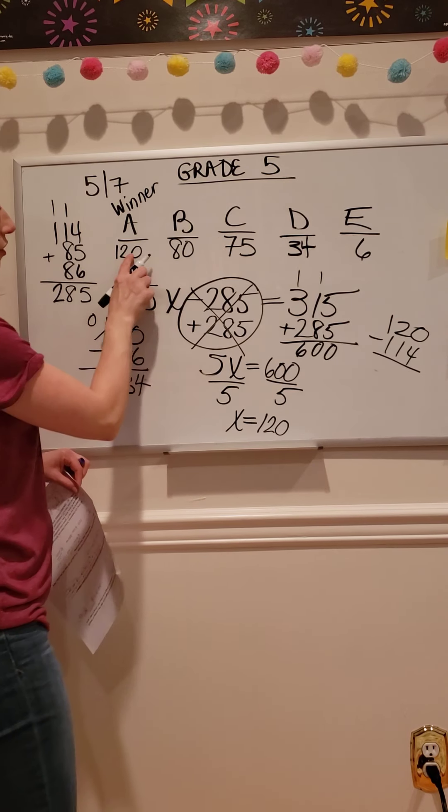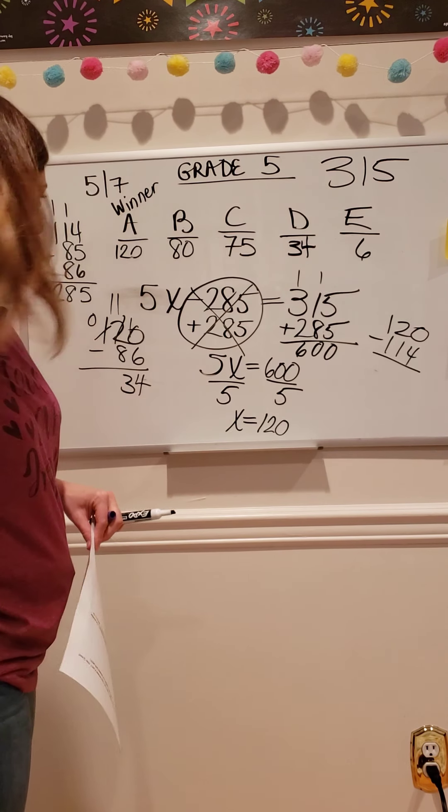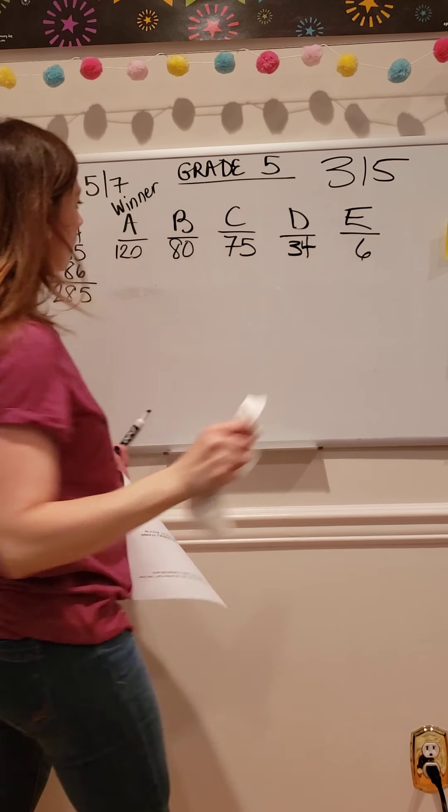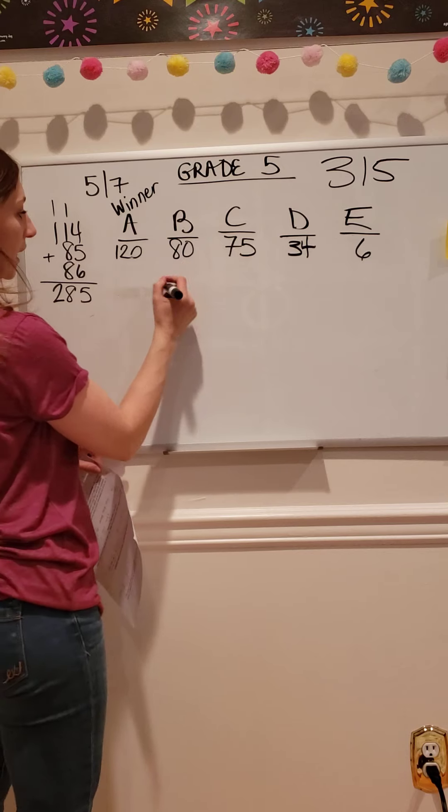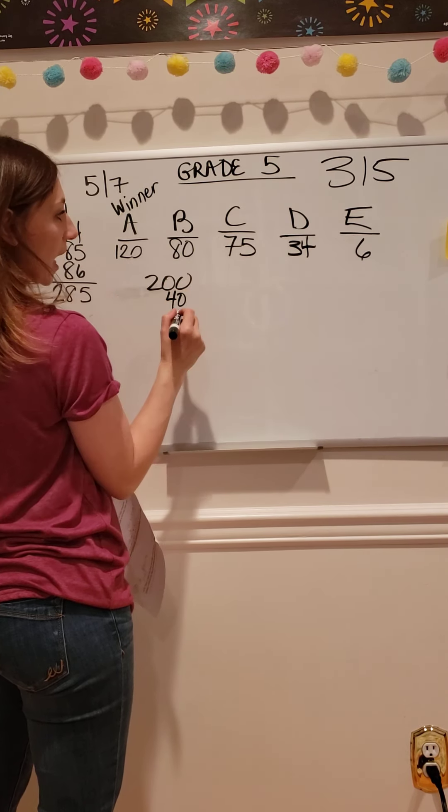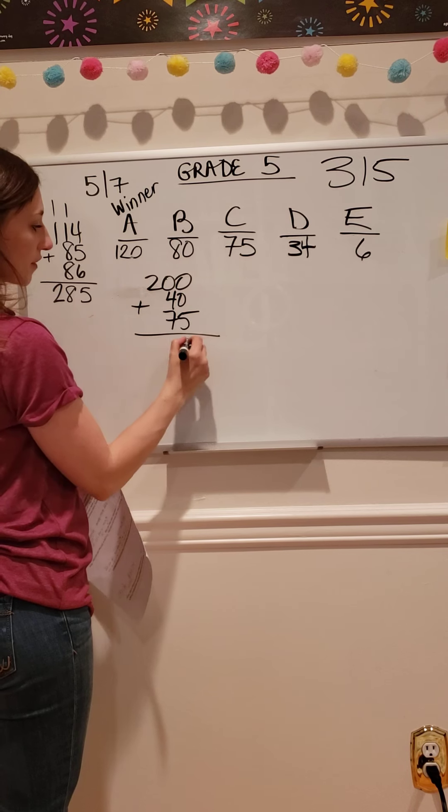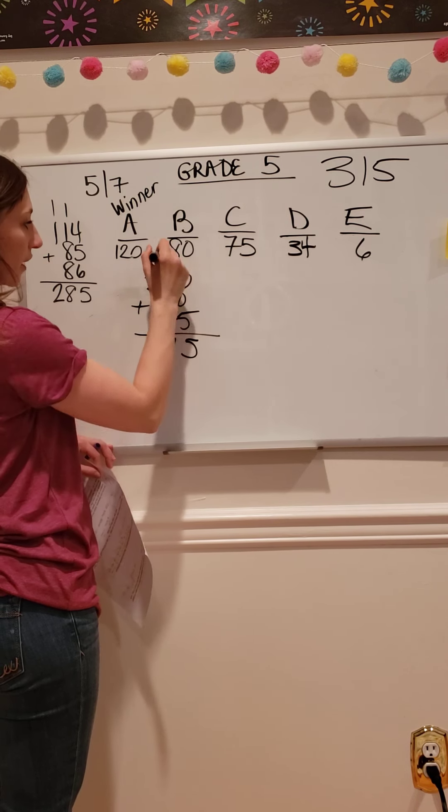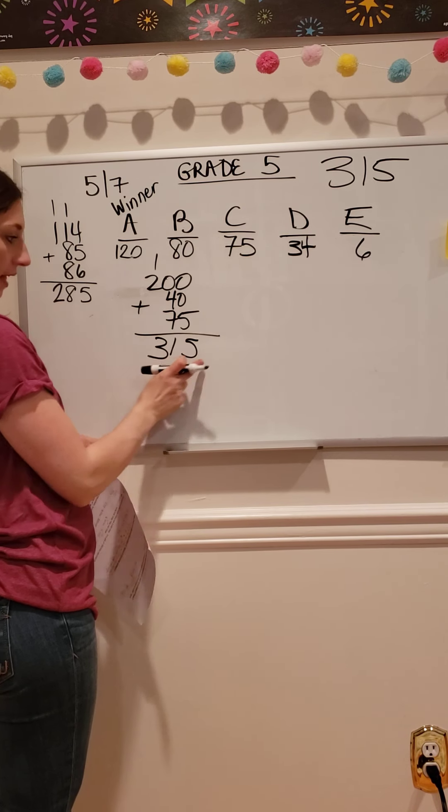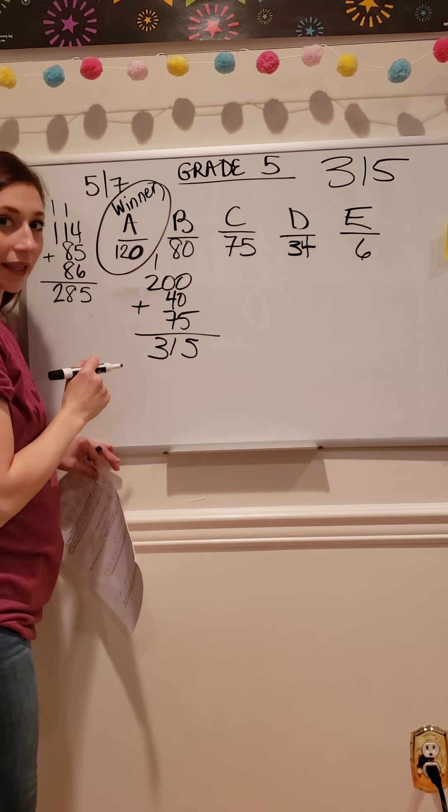The reason that I did that is so now I can add up all the votes because it has to equal the grand total of 315. So I have 120 and 80 is going to be 200. Then I have 34 and 6 would be 40 and 75. Let's see if that equals 315 when I add them up. 0 plus 0 plus 5 is 5, 4 plus 7 is 11, carry the 1. 1 plus 2 makes 3. And that is the grand total of students that voted. And that tells me my winner got 120 votes.